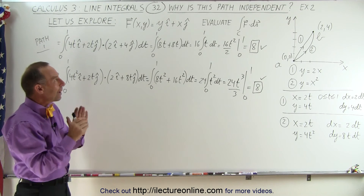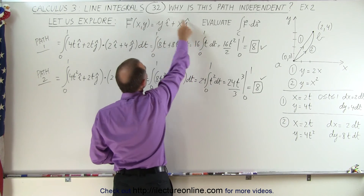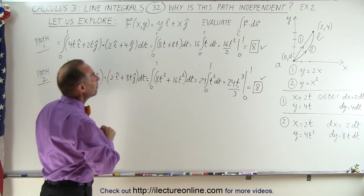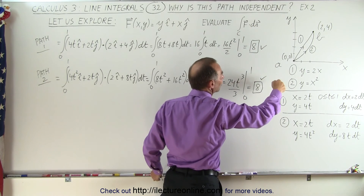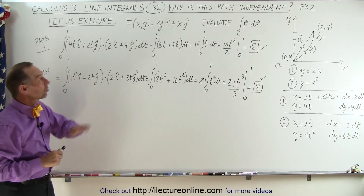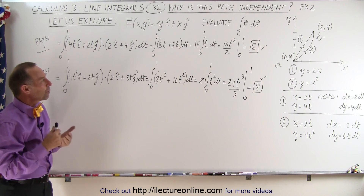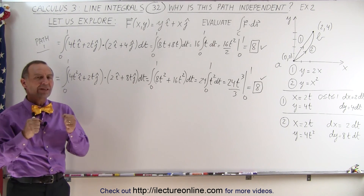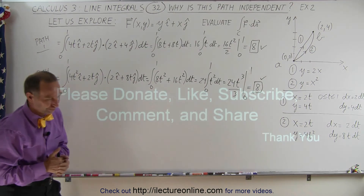So path independence or path dependence seems to depend on the vector field through which we travel. Something about the vector field causes the line integral to be path independent — no matter which path we take from one point to another, we get the same result. We're getting on track to understand what we mean by that, so let's explore what it is about that vector field.